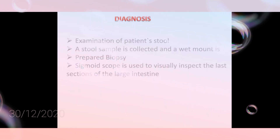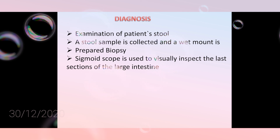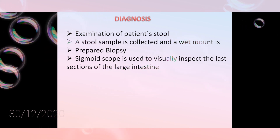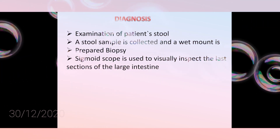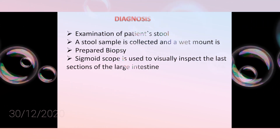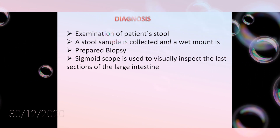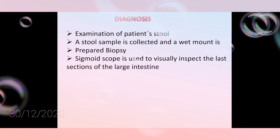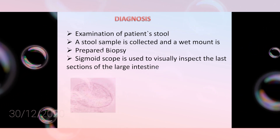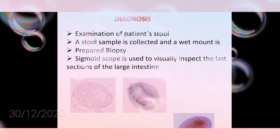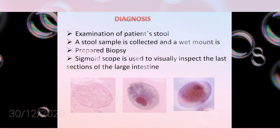Diagnosis involves examination of the patient's stool — a stool sample is collected and prepared — and biopsy. Sigmoidoscopy is used to inspect the last sections of the large intestine. These slides show the presence of cysts in the stool.